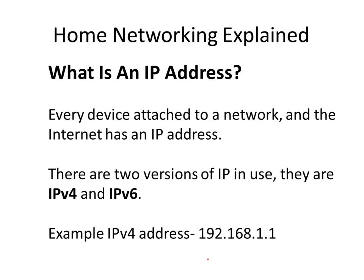Here's an example of an IPv4 address: 192.168.1.1. It uses a dotted decimal notation, so each one of these is a decimal number and the values of that decimal number range from 0 to 255.